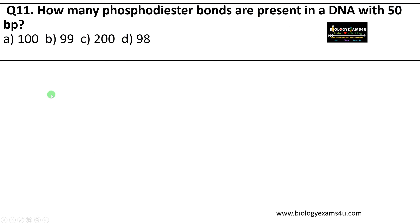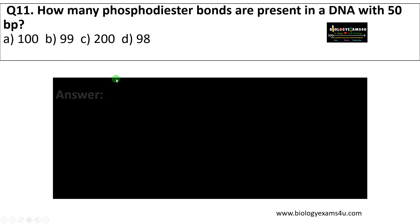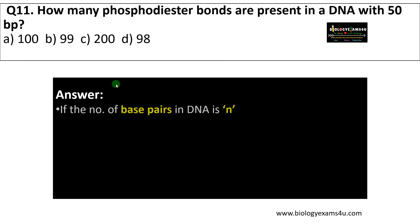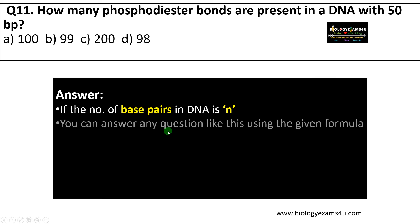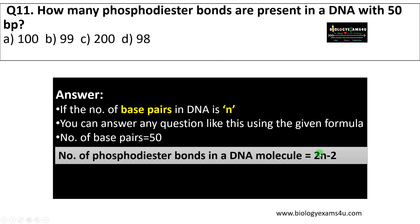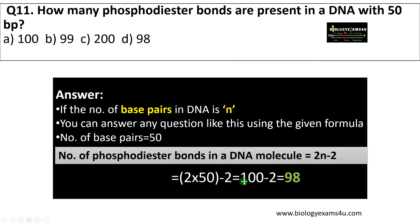How many phosphodiester bonds are present in a DNA with 50 base pairs? Using the equation 2N minus 2: 2 into 50 minus 2 = 100 minus 2 = 98 phosphodiester bonds in a DNA molecule with 50 base pairs.